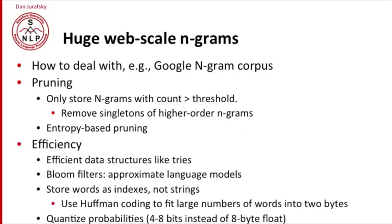So that's pruning. And we can do a number of other efficiency things. We can use efficient data structures like tries. We can use approximate language models which are very efficient but are not guaranteed to give you the exact same probability. We have to do efficient things like don't store the actual strings but just store indices. We can use Huffman coding and often instead of storing our probabilities as these big eight byte floats, we might just do some kind of quantization and just store a small number of bits for our probabilities.